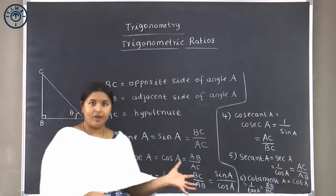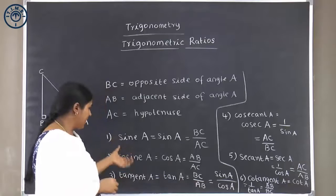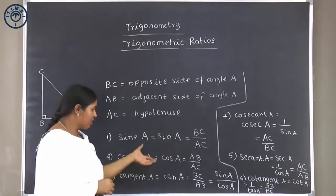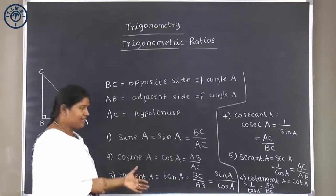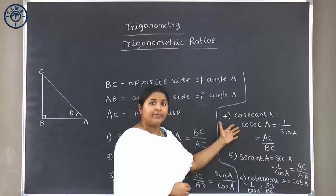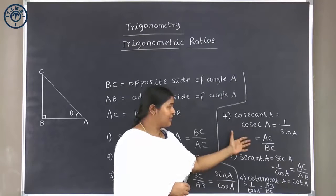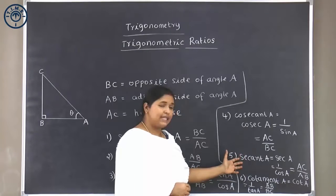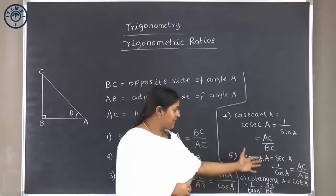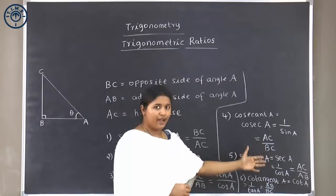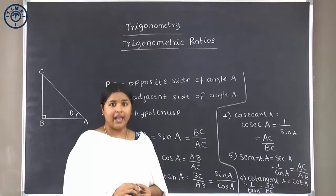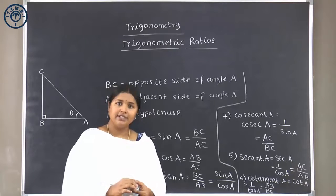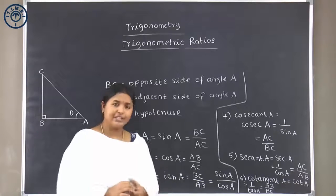I hope the six trigonometric ratios were clear. Sine A is opposite side by hypotenuse. Cos A is adjacent side by hypotenuse. Tan A is opposite side by adjacent side. Cosecant A, the inverse of sine A, is hypotenuse by opposite side. Secant A, the multiplicative inverse of cosine A, is hypotenuse by adjacent side. And cotangent A, the multiplicative inverse of tan A, is adjacent side by opposite side. I hope the six ratios were clear.